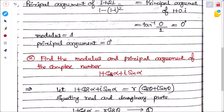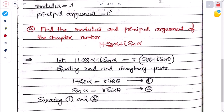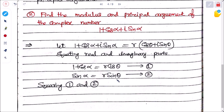Second question: find the modulus and principal argument of 1 + cos α + i sin α. We compare real and imaginary parts with r(cos θ + i sin θ), giving: 1 + cos α = r cos θ and sin α = r sin θ.